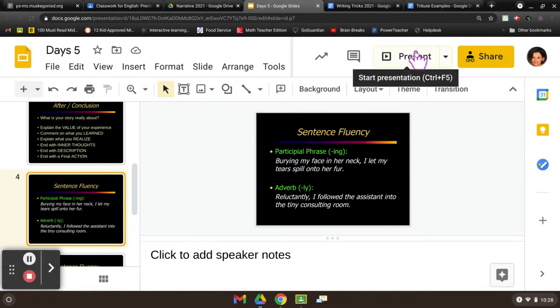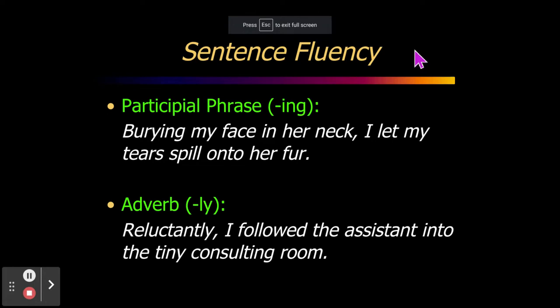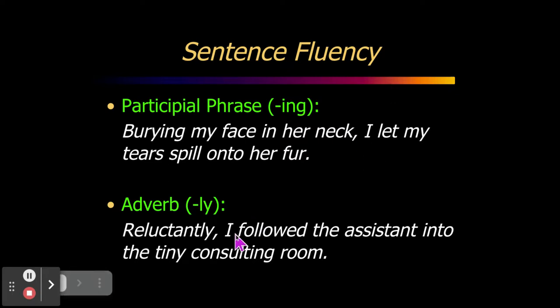And lastly, you can access our agenda — you have these slides. We've been working really hard on sentence fluency this year, so you don't just start with 'he, he, she, I, I' — just boring subject-verb sentence construction. There is a component for sentence fluency on the rubric. Participial phrase: start off with an ING phrase. 'Burying my face in her neck, I let my tears spill onto her fur.' This writer was writing about the dog, an experience that really mattered. Start off with an adverb — an LY word, like 'reluctantly, I followed the assistant into the tiny consulting room at the vet's office.' Joyfully, exuberantly, excitedly, wildly, energetically — it's an easy way to start instead of just starting with I or he. Look for a sentence in your piece that starts with I or he — kick it off with an LY or maybe an ING phrase.